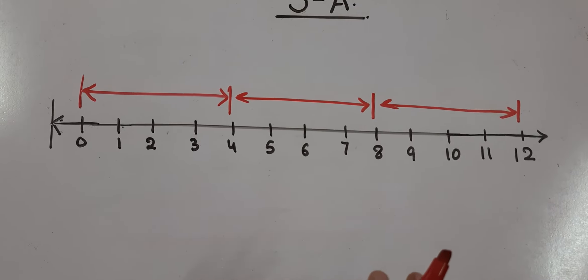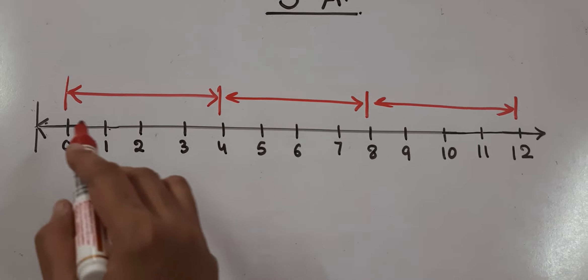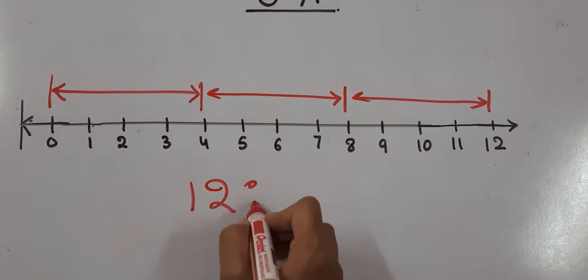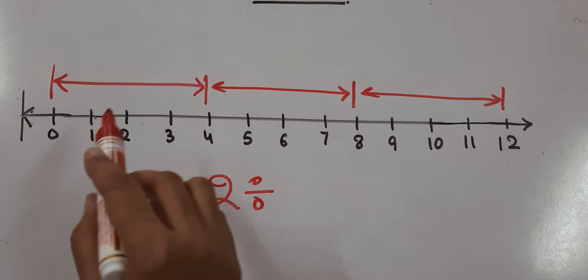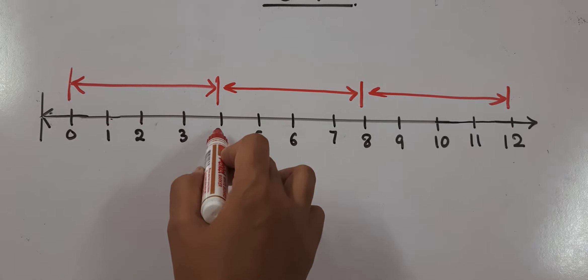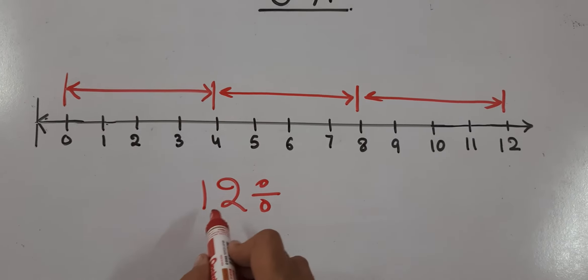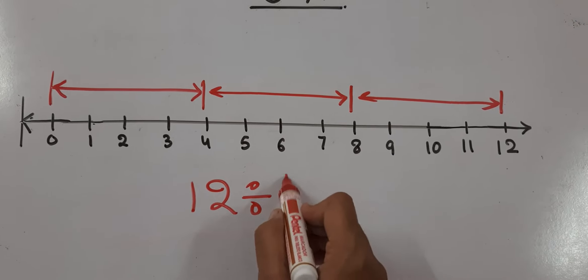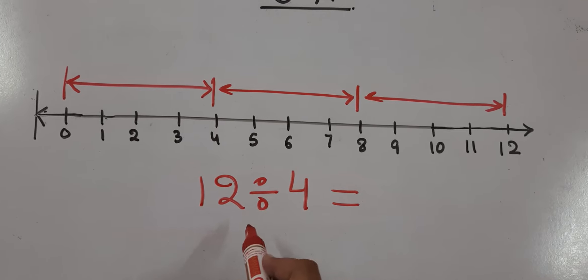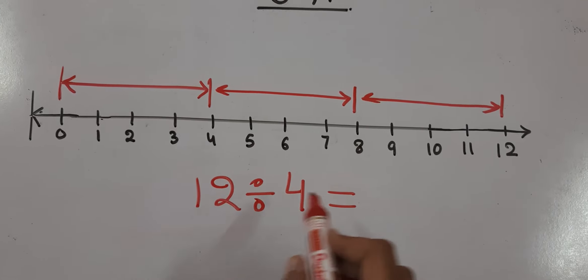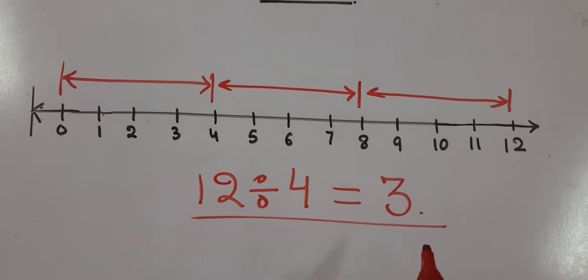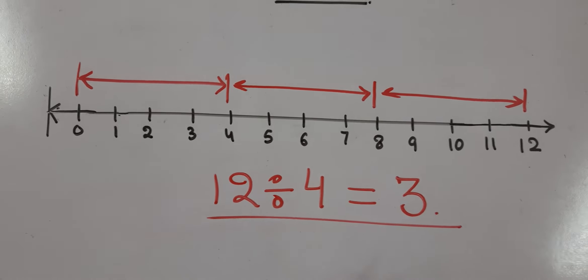Let's take another example. How many total sections do we have? We have 12 total sections. Each section is divided into 4 points. So we will divide 12 by 4: 4 ones are 4, 4 twos are 8, 4 threes are 12. So we write 4 times 3 equals 12, and this will be the division sentence for the given number line.